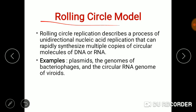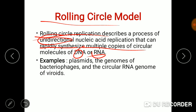The second model is the rolling circle model. Rolling circle replication describes a process of unidirectional nucleic acid replication that can rapidly synthesize multiple copies of circular molecules of DNA or RNA. Examples of the rolling circle model include plasmids, the genome of bacteriophages, and circular RNA genomes of viroids.